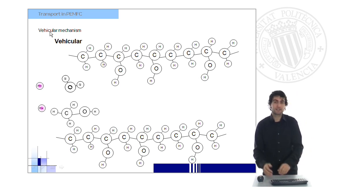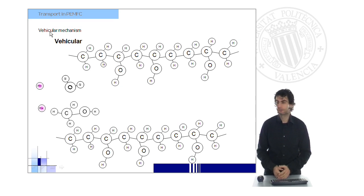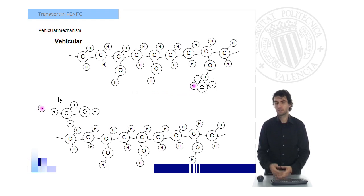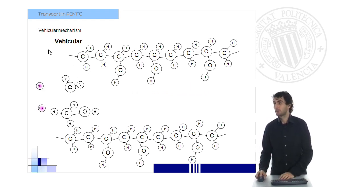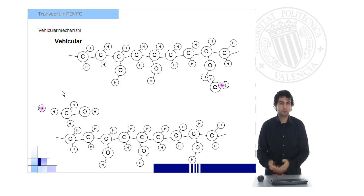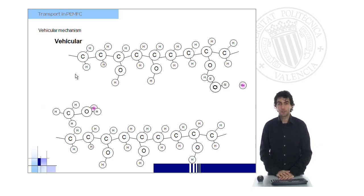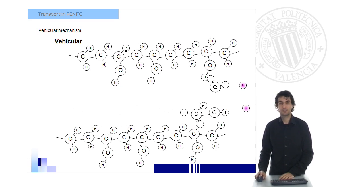The other main mechanism for proton conduction, for proton transfer through the electrolyte, is the so-called vehicular mechanism. In this case, protons act as you or me every morning when we just get on the bus to come to the university or to work. And they are associated with a water molecule, and then they flow all together from the anode to the cathode. The same will happen if other molecules like a methanol molecule would be present in the electrolyte, and the main difference is that in this case, it is not only the proton which is traveling around the electrolyte, but also a molecule which is associated with it.